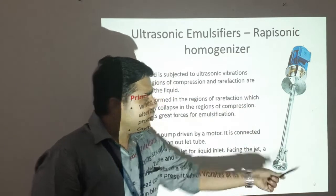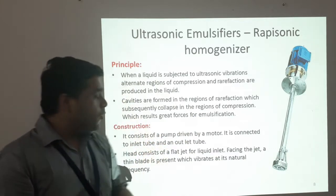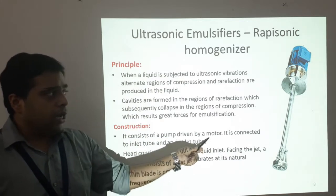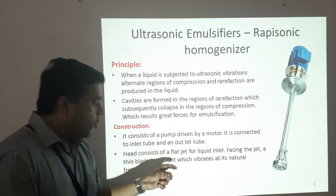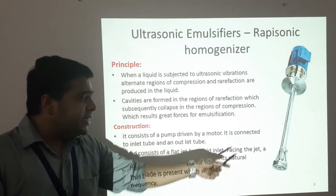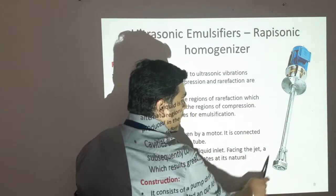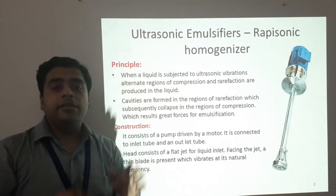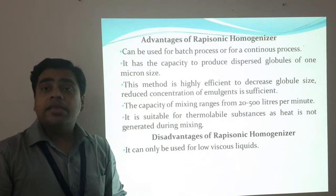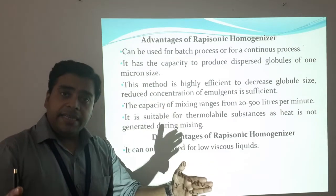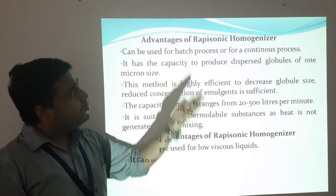The construction is quite simple. This device is fixed with the mixing tank where both phases to be emulsified are placed. It consists of a pump driven by a motor, connected to an inlet tube and an outlet tube. The head consists of a flat jet for liquid inlet, and facing the jet, a thin blade is present which vibrates at its natural frequency. This shaft and attachment — the rapisonic emulsifier — is dipped into the mixing tank. It can be used for batch processes or even for continuous processes.